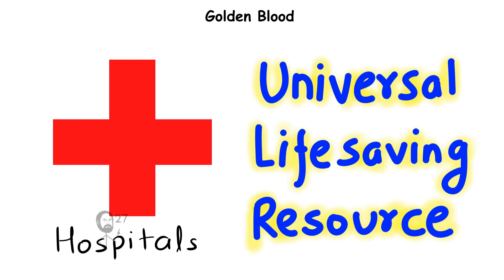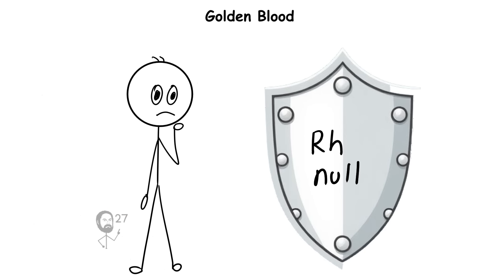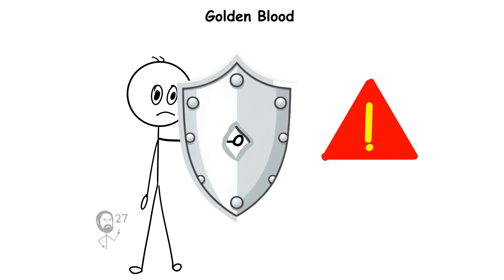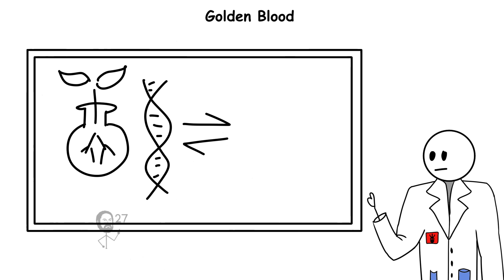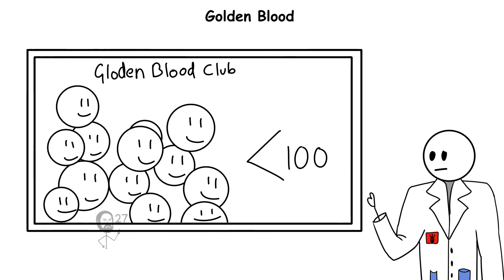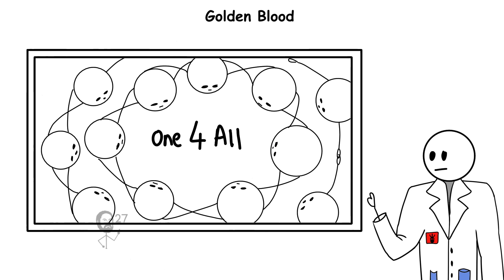Yet the same trait creates a vulnerability for its carriers. They can only safely receive blood from other Rh-null donors. In practical terms, they hold the biological equivalent of a universal key for others, while belonging to an extremely small club when they themselves need help.